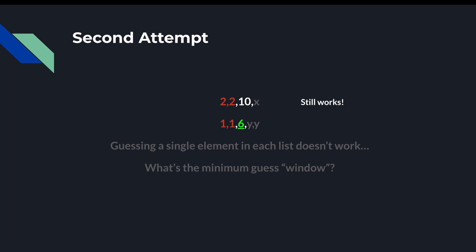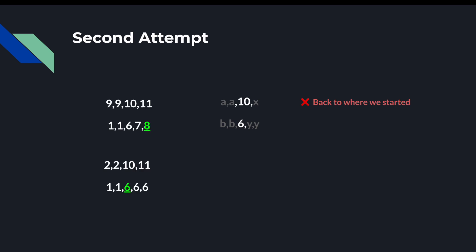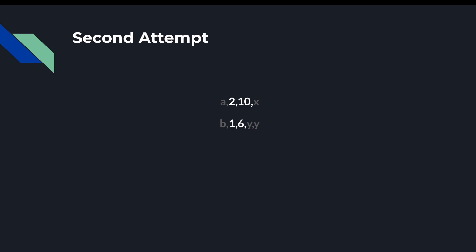Now, what if we remove something on the left of the 10 and 6, say the first element of both arrays? Do we lose any information? No, we don't. Since A is less than or equal to 2, and B is less than or equal to 1, we can still correctly deduce that A and B and 1 and 2 make up the four smallest elements, so 6 is still the median. Can we remove any more elements? If we remove 6 and 10 from our guess window, we can still deduce that A, B, 1, and 2 are the four smallest elements. However, we can't tell whether X or Y is the next larger element. Therefore, the median in this case is ambiguous.